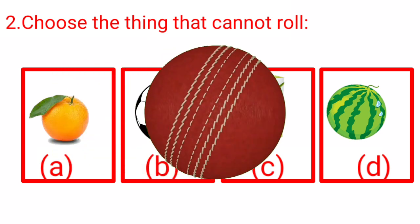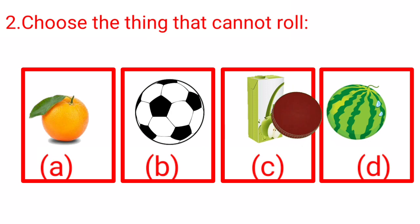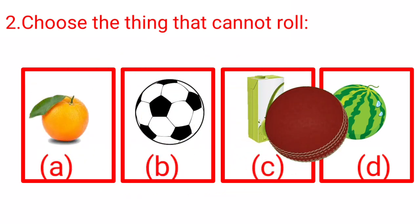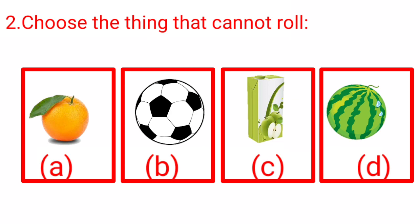We all know the things that can roll look like a ball. As a ball can roll, so do the things. And the things which are not like a ball cannot roll down. Let's check the things which are not similar to a ball.